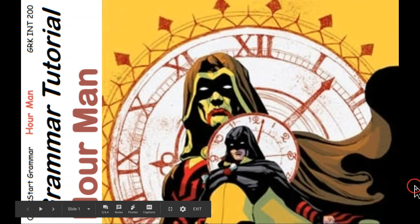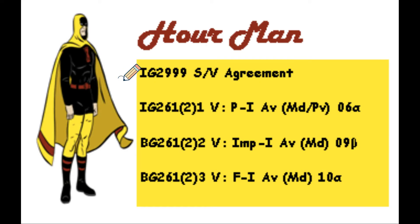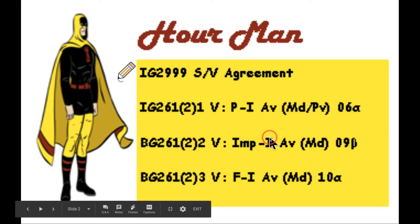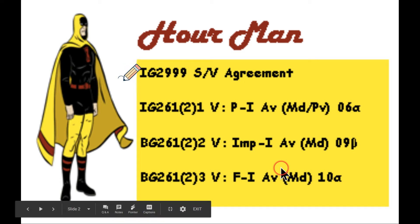A tutorial on the 'Hour Man,' a superhero that can turn back time one hour. How appropriate that we're dealing with Hour Man, because we're going to deal with verbs — especially the imperfect and the future — because those will occur most definitely on the national Greek exam.